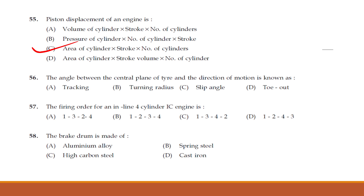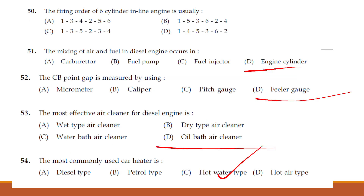The angle between the central plane of the tyre and the direction of motion is known as — it is option C — slip angle. The angle between the central plane of the tyre and direction of movement is known as a slip angle. The firing order of an inline 4-cylinder IC engine is 1342.